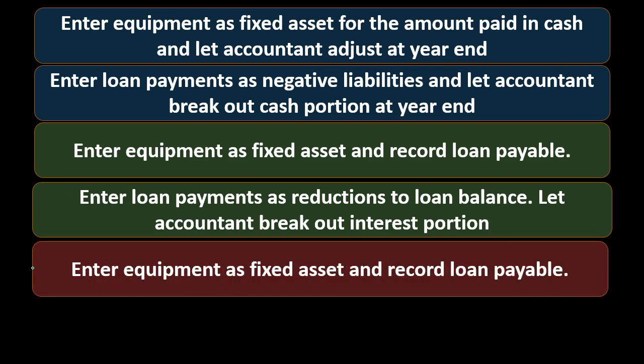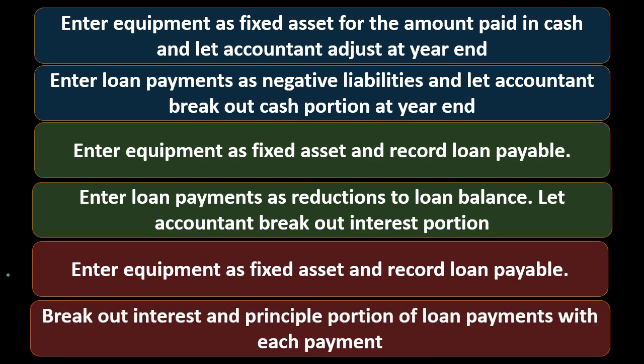Our last option is to do the full service process. We're going to enter the equipment as a fixed asset and record the loan, same as our second option. However, we'll also figure out the amortization table — meaning we'll figure out how much of each payment should be allocated to a decrease of the loan principal and how much should be allocated to interest expense for each payment.